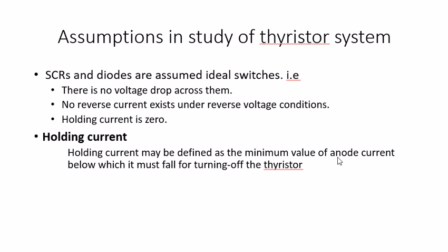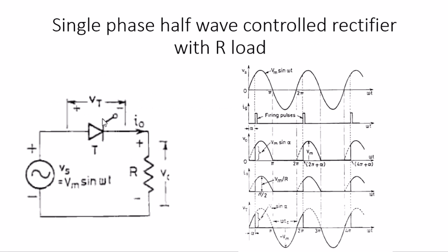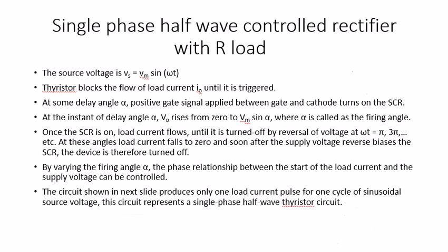The anode current is nothing but the positive input current flowing through the thyristor. Now we have entered the loads — we are going to add loads to the circuits.